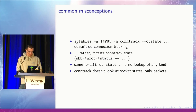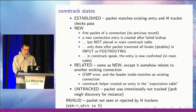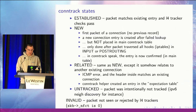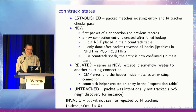Conntrack supports several different states. The most common one you will see is 'established', which is basically always true when we have an existing entry and the layer 4 tracker checks pass — so TCP flag combinations are okay, packets are in-window, and so on.